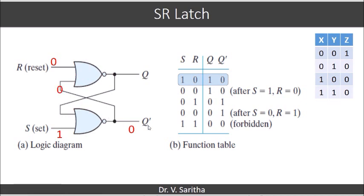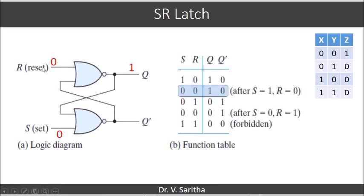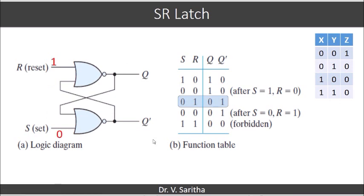This 0 is fed back as input to the other NOR gate. With inputs 0 and 0, the output of that NOR gate becomes 1, so Q=1 and Q-bar=0. Now when both S and R are 0, the previous value of Q (which is 1) is fed back. With inputs 1 and 0, output is 0; with inputs 0 and 0, output is 1 — so the circuit preserves the state of 1 and 0.